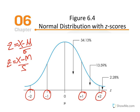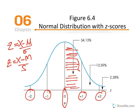Once we convert an x value into a z-score, we are identifying the location of that x value expressed in standard deviation units. This slide indicates the proportion of scores that fall between the mean of a distribution and one standard deviation unit. For any normal distribution, 34.13% of the scores will fall within the range from the mean to one standard deviation unit — in terms of proportions, that would be 0.3413.